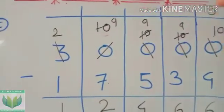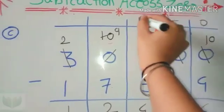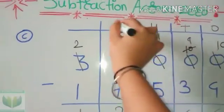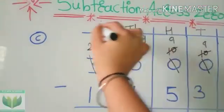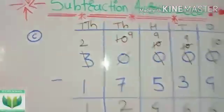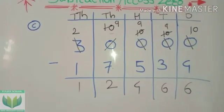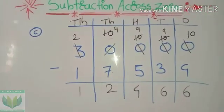The place values are: ones 10, hundreds 100, thousands 1,000, and the last one is 10,000. Now let's see another example.